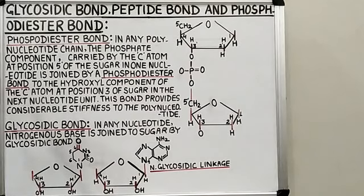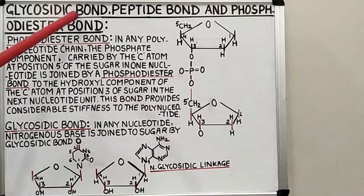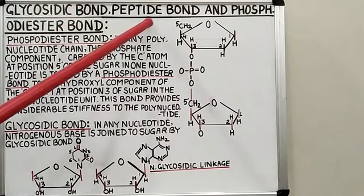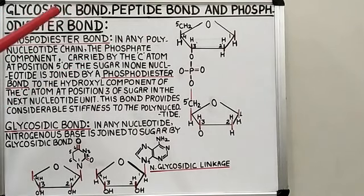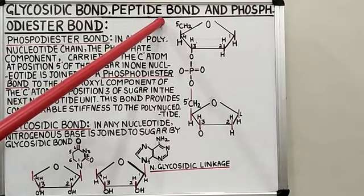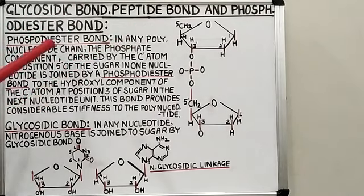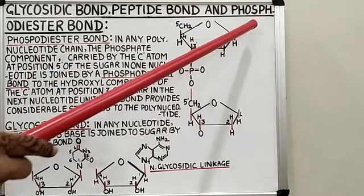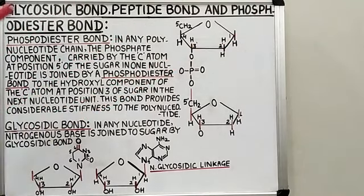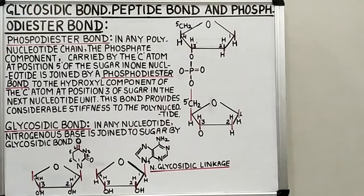Hello students. In the previous lecture we studied about the glycosidic bond and peptide bonds found in various polysaccharides and polypeptides. Here in this lecture we will study about the phosphodiester bond and glycosidic bond found in polynucleotides.